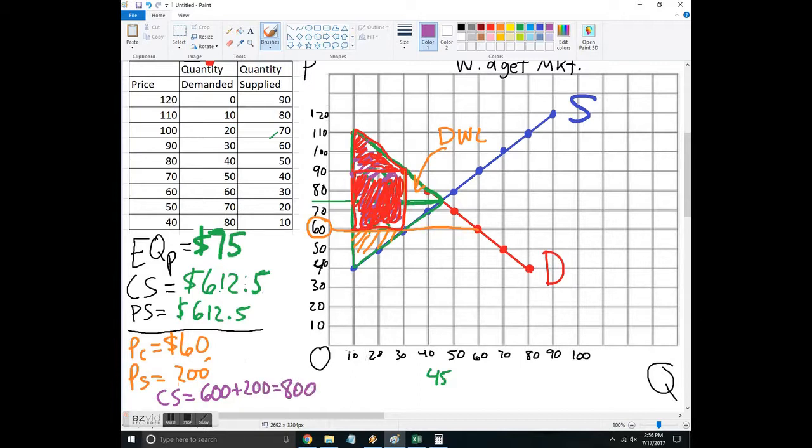What we can conclude from this price ceiling where the government knocked the price down from equilibrium is this was costly to the producers. The consumers actually come out ahead. They went from a surplus of 612.50 all the way to 800. So the consumer surplus ate up some of the producer surplus, and you can see that graphically there.